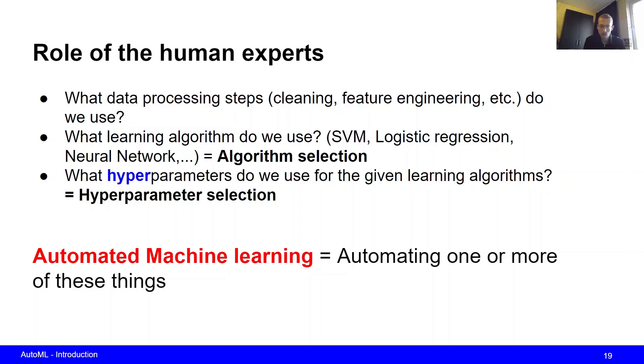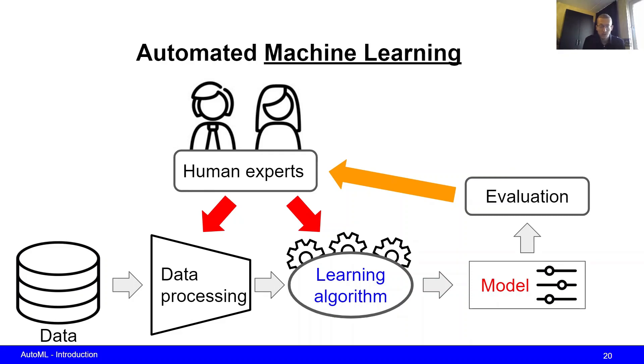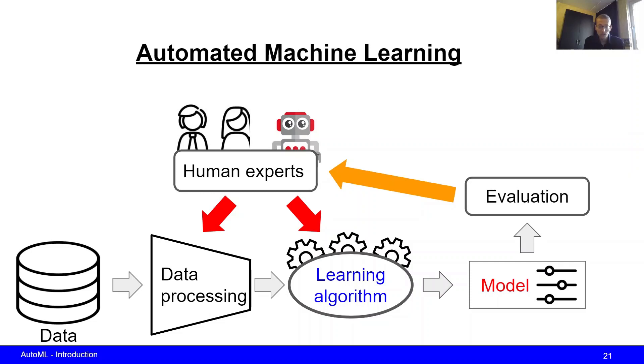What that looks like in the image is that instead of the human being fully responsible for all of these choices, we introduce an AutoML agent which is either responsible for part of the choices that have to be made, or it can fully replace the human and be responsible for making all of these choices.